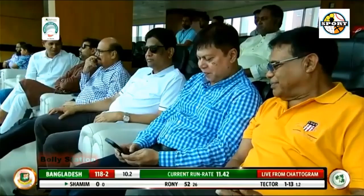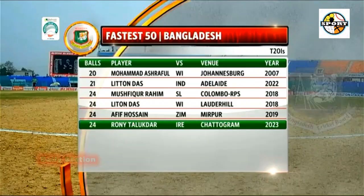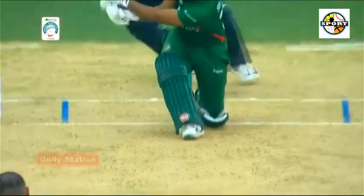Hume to Rony Talukdar — 4. Back of a length outside off, stands up short. Rony Talukdar pulls off the front foot, in the air and just wide of the diving deep mid-wicket fielder to his left — who went with an outstretched left hand but it went wide of the fielder.